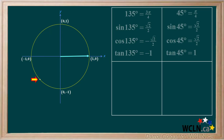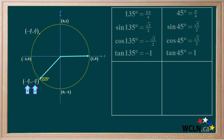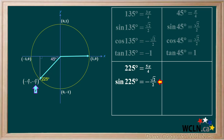The next point is in quadrant 3, corresponding to a principal angle of 225 degrees. We'll draw the terminal arm. The coordinates are negative root 2 over 2 for x and negative root 2 over 2 for y. 225 degrees equals 5 pi over 4 radians. We'll draw a right triangle to get the reference angle; the reference angle for 225 degrees is 45 degrees. The sine is y over r, which is negative root 2 over 2 over 1, or negative root 2 over 2 — sine is negative in the third quadrant. The cosine is x over r, which is negative root 2 over 2 over 1.